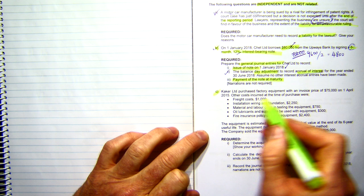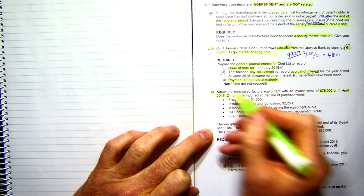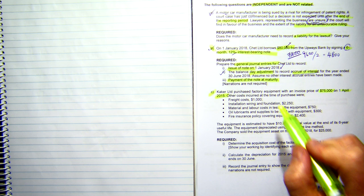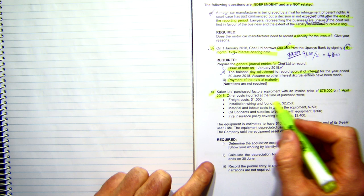Alright, we've got part C now. Caker Limited purchased factory equipment with an invoice price of $75,000 on the 1st of April 2015. Now, in these sorts of questions, dates are very important, so make sure you pay attention to your dates, because these usually go over a couple of periods.